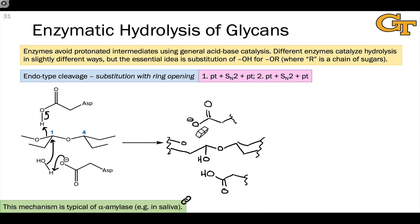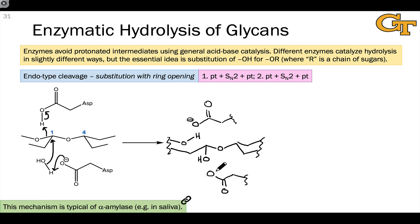At this point, a second SN2 step can take place, again catalyzed by the general acid and general base, involving this newly formed hydroxyl group as a nucleophile and this C-O bond as the bond that's going to break. So let's draw out the acidic proton and the general acid catalyst to get this going. The idea, again, is SN2, but catalyzed by general base and acid.